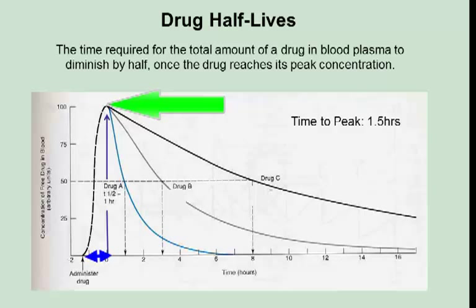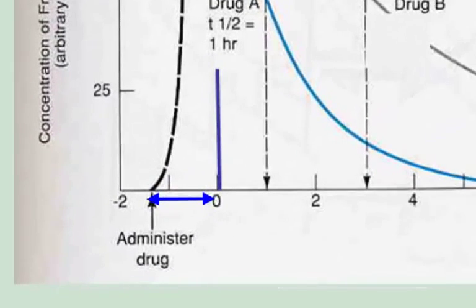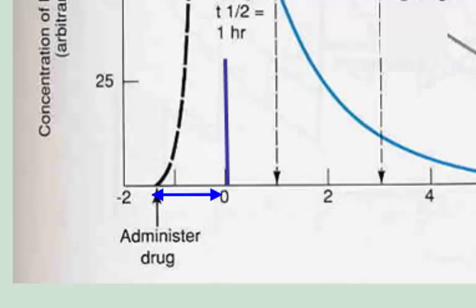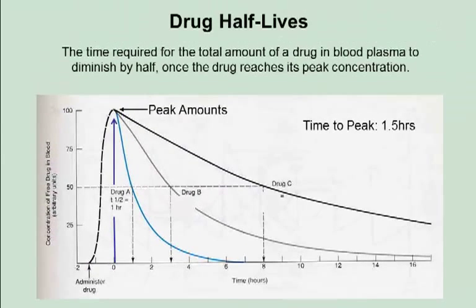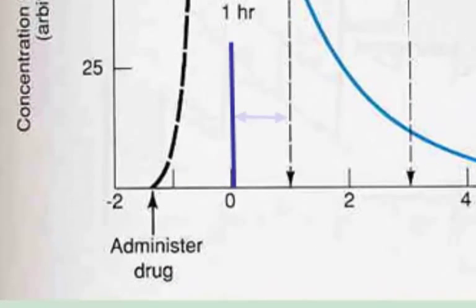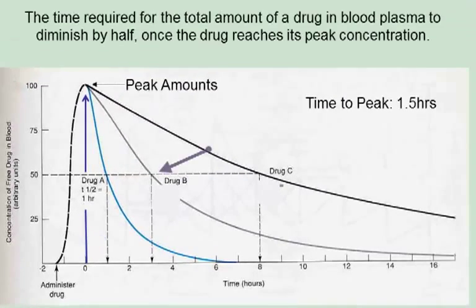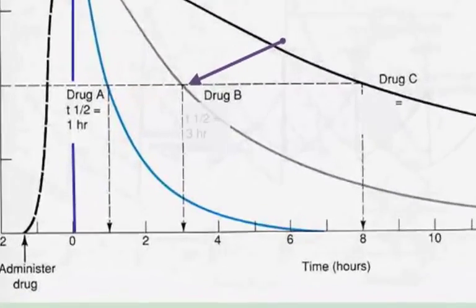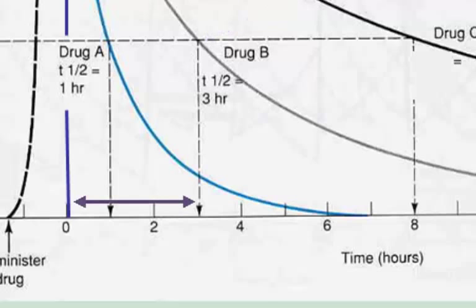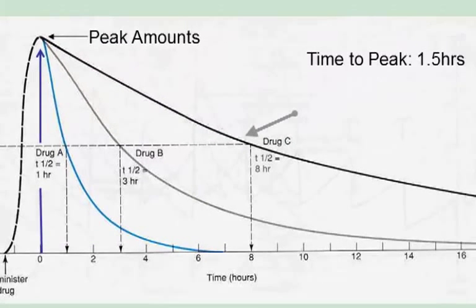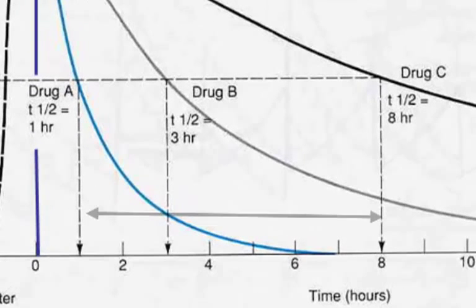Here we can see for all three drugs — A, B, and C — the time to peak is an hour and a half. Based on that, the half-life for drug A, which is the blue curve, is one hour. The half-life for drug B, which is the gray curve, is three hours. And the half-life for drug C, which is the black curve, is eight hours.